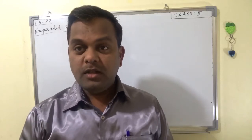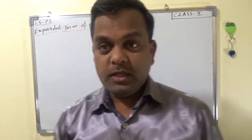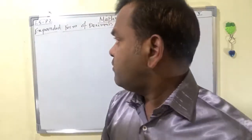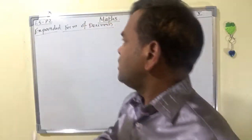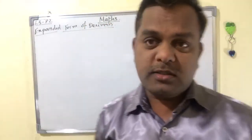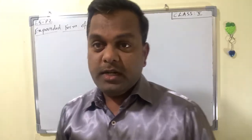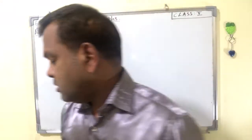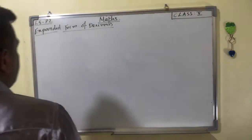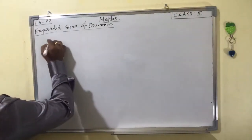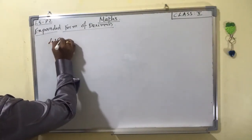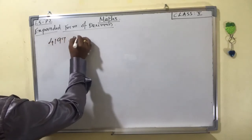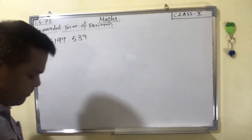Hello dear students. In this video we are going to learn about the decimal lesson continuation. We are going to learn the expanded form of decimals. Let me explain with one example: four thousand one hundred and ninety seven point five three nine.